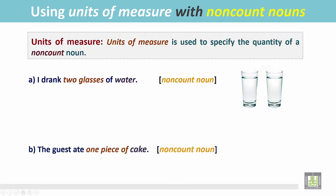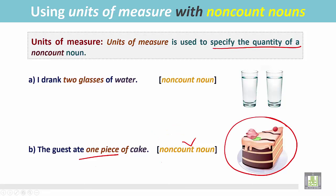Another example. The guest ate one piece of cake and cake is a non-count noun. One piece is specifying the quantity of this cake.